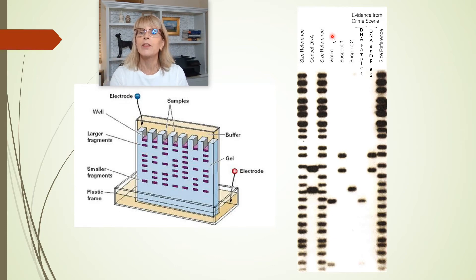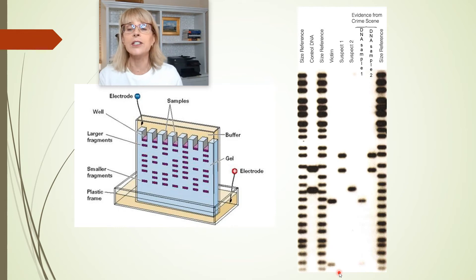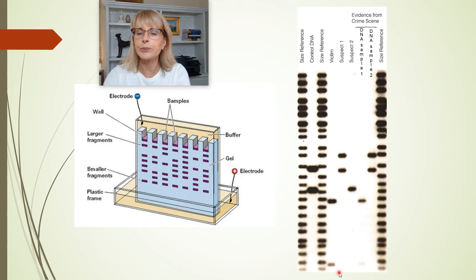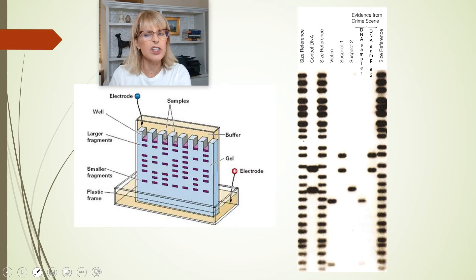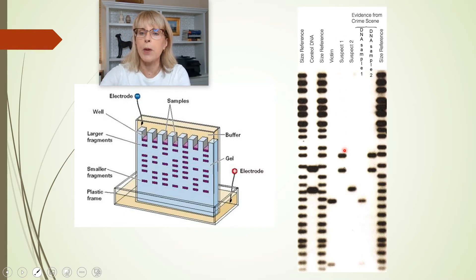Here's what you do need to know. This whole lane right here, that whole lane is all the DNA from the victim. And you'll notice that with this particular enzyme, this victim had one kind of smallish chunk of DNA and one really tiny chunk of DNA. That's what the victim had. Then we've got suspect number one.